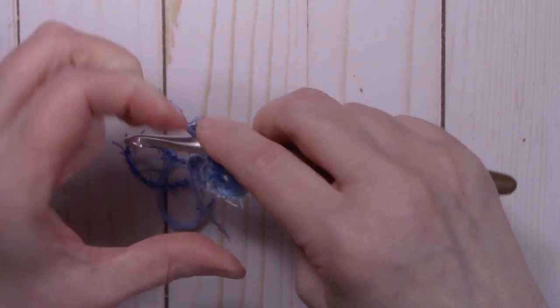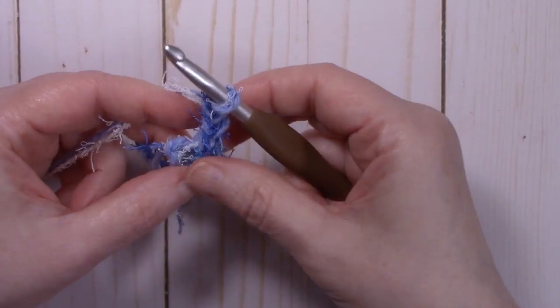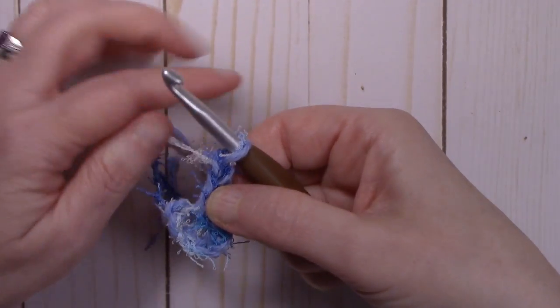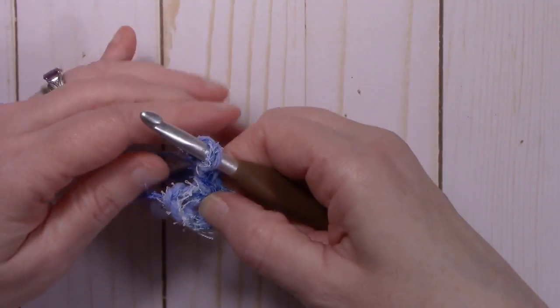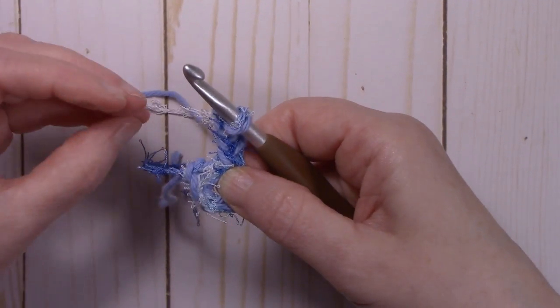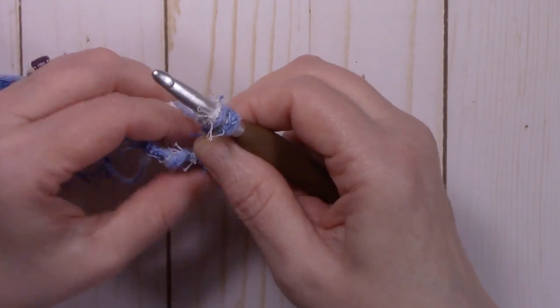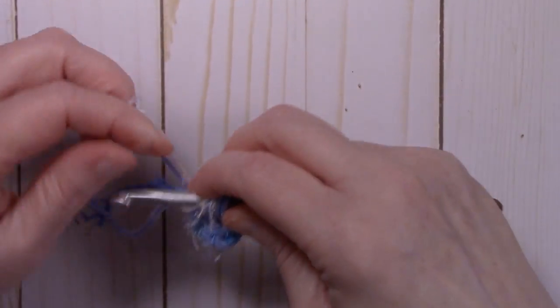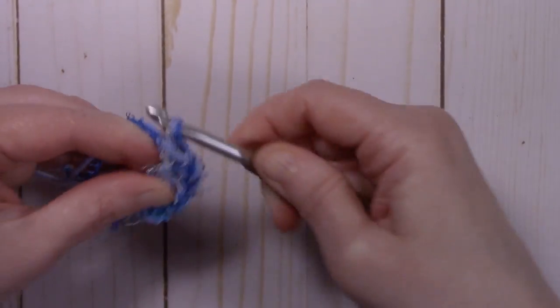So we're going to chain up three. One, two, three. That's going to count as our first double crochet. The cotton yarn helps us see our stitches a little bit better. With just using the scrubby yarn, it's kind of difficult to see our stitches. Plus the cotton yarn helps give our scrubby a little bit more thickness and a little bit more body. So we're going to go ahead and we're going to put eleven double crochets into that ring. So here's our first one.